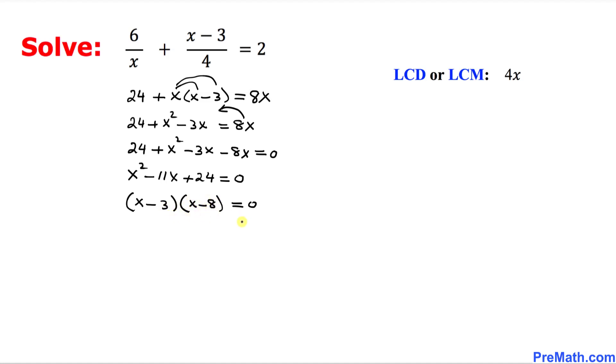Since these two factors are equal to 0, I am going to split them up. I'm going to separate them. x minus 3 equal to 0, and the other side is going to be x minus 8 equal to 0.